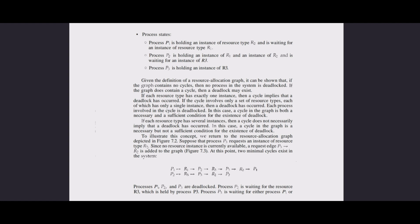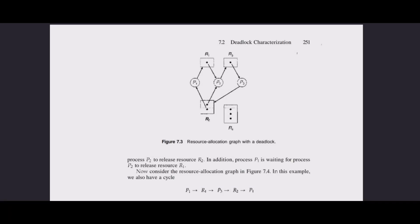To illustrate this concept, consider the resource allocation graph in figure 7.2. Suppose process P3 requests an instance of resource type R2. Since no resource instance is currently available, a request edge P3 → R2 is added to the graph as shown in figure 7.3. At this point, two minimal cycles exist in the system. Processes P1, P2, and P3 are deadlocked: P2 is waiting for R3 held by P3; P3 is waiting for either P1 or P2 to release R2; and P1 is waiting for P2 to release R1.